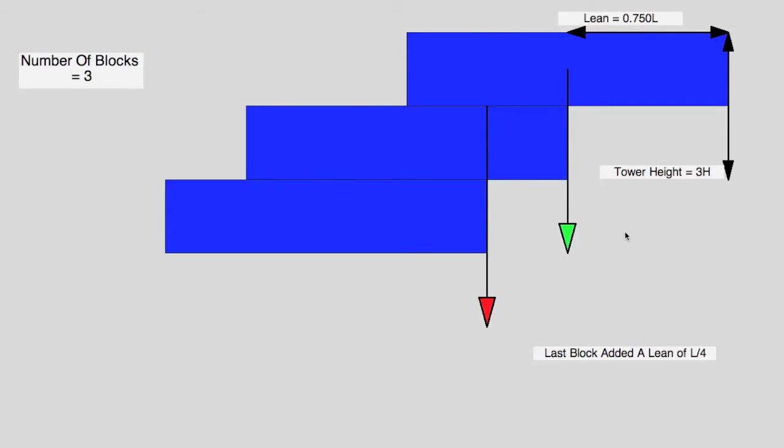So let's put that in. So with this extra block that we got here, this gave us an extra lean of L over 4, and it's now 3 high, and we've got an overall lean of 3 quarters of the length, 0.75 times the length.